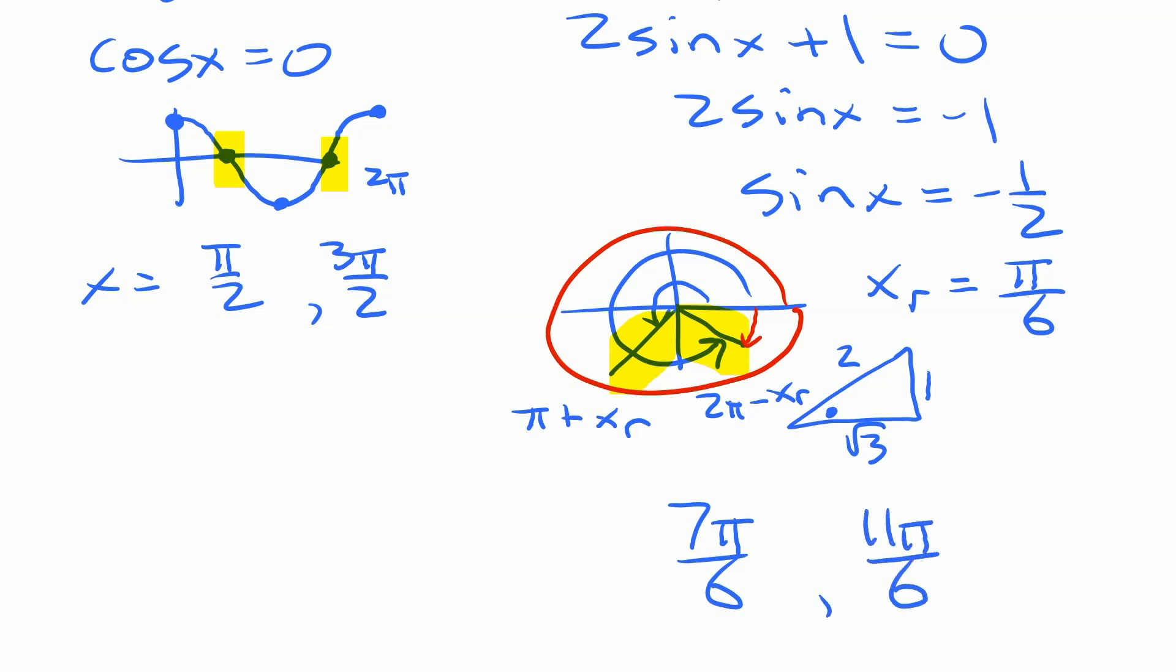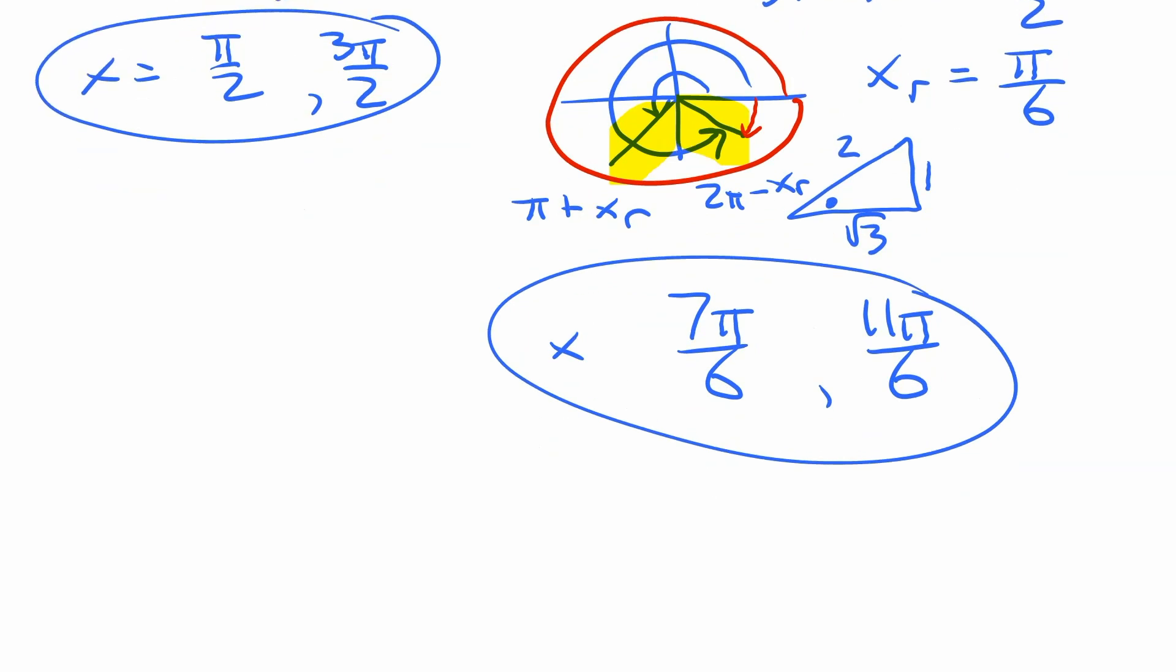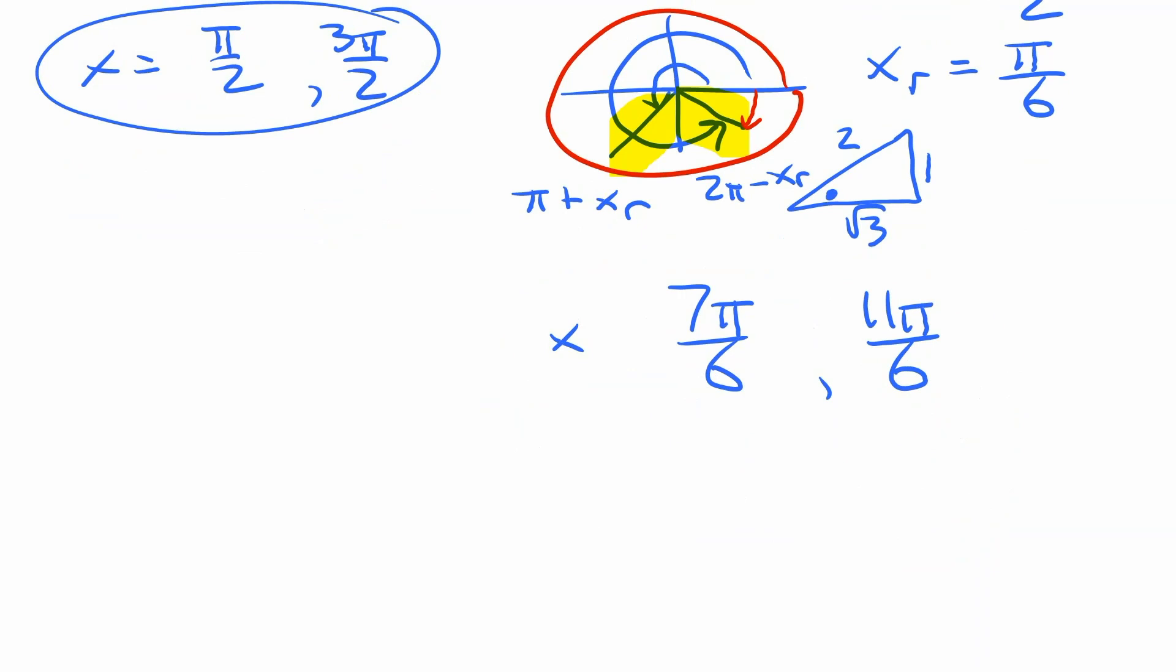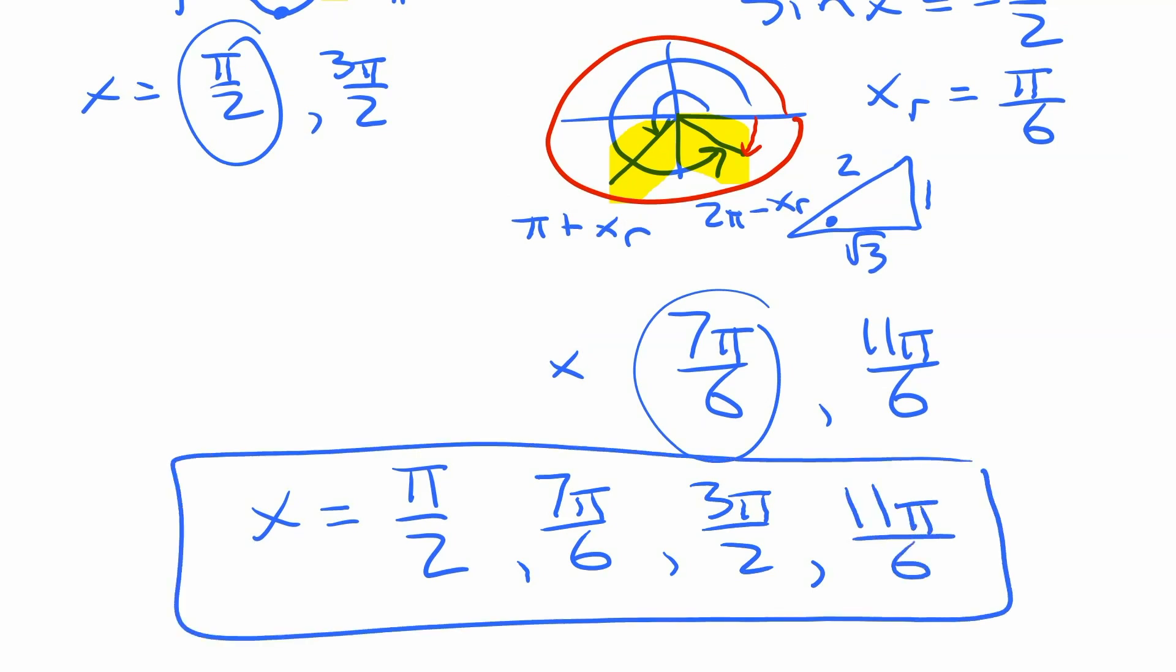So we have four solutions here that we can put all together at the end. We have those two from that side, and those two from that side. Our four solutions are, we can put at the bottom here. We have π over 2. If you want them in order of smallest to biggest, it's going to be that one first, then 7π over 6, and then 3π over 2 is the next one, and the biggest one is 11π over 6. Those are our four solutions for that equation.